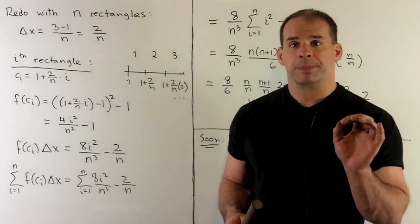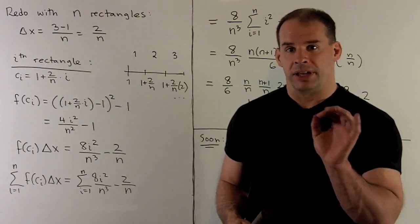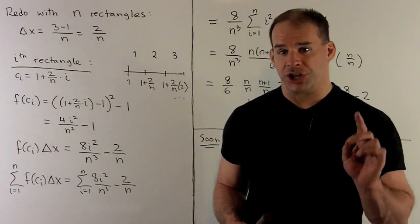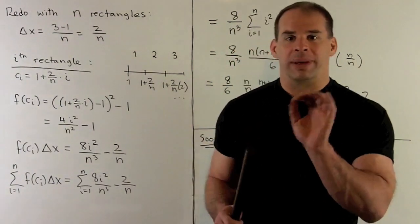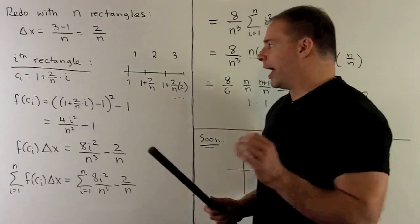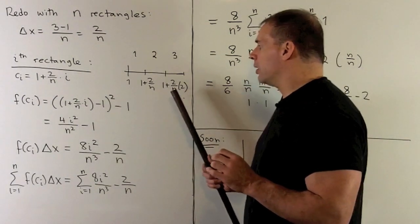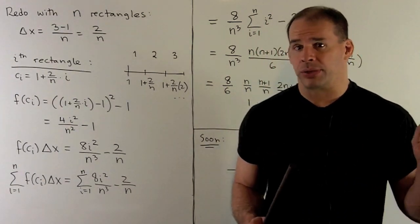To find the heights, we're going to take our function, apply it to each right endpoint. Now, to get those, we have to figure out our partition. So, we'll start with 1, and we're going to repeatedly add our delta x until we get to 3. So, we'll have 1, 1 plus 2 over n, 1 plus 2 over n times 2, 1 plus 2 over n times 3, and so on until we get to 3.